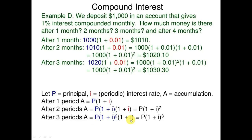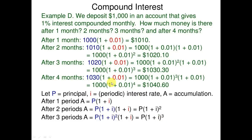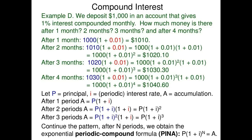After three periods: A equals P into (1 + i) cubed. After four months: 1030 into (1 + 0.01) equals 10,000 into (1 + 0.01) to the power 4, that is 10,040.06. Continuing the pattern, after n intervals we obtain the exponential periodic compound formula.